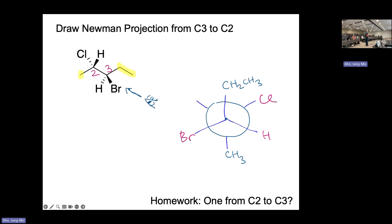Where the chlorine has to go, your right side. Hydrogen goes down. That's the Newman projection of this molecule when you're looking through C3 to C2.